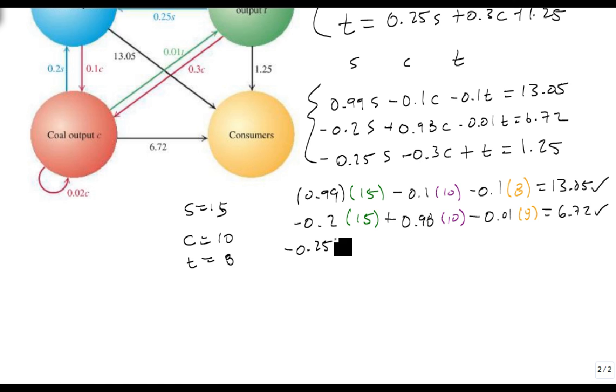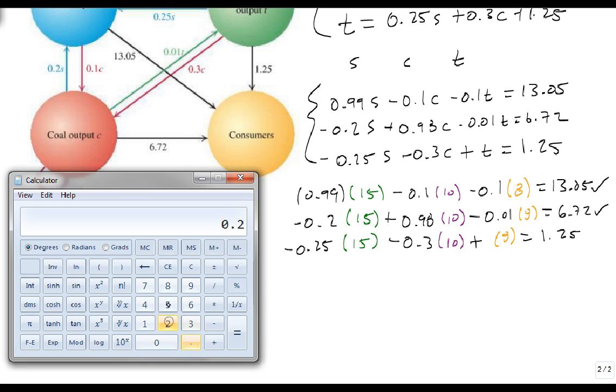Our last one, minus 0.25 times 15 minus 0.3 times 10 plus 8, does that equal 1.25? So minus 0.25 times 15 minus 0.3 times 10 plus 8, sure enough, 1.25.